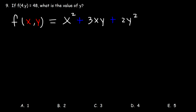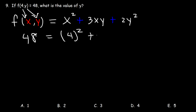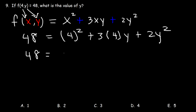Number 9: if f of 4, y is 48, what is the value of y? We can replace the function with 48, because the function equals 48 and x is equal to 4. The first number corresponds to x, the second to y, and our goal is to find the value of y. 4 squared is 4 times 4, that's 16. 3 times 4 is 12. And so this is what we have.